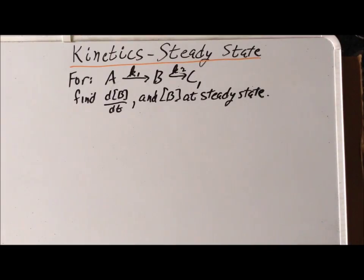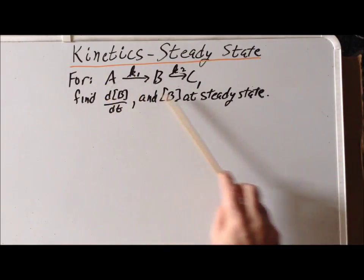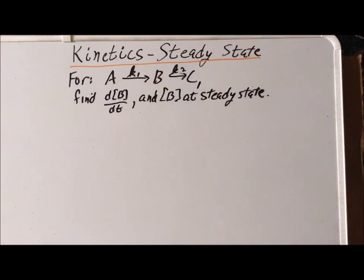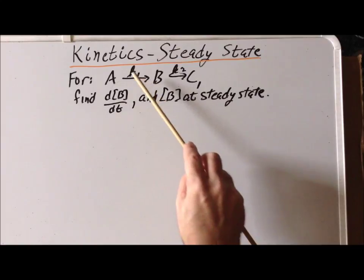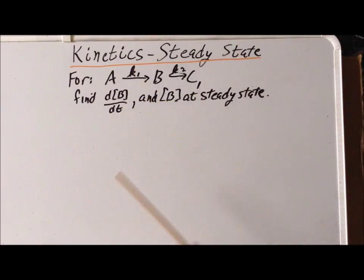Hello. In this video, we'd like to solve the following problem. Assume that we have the following reaction that consists of elementary steps of A going to B with a rate constant of K1, B going to C with a rate constant K2.